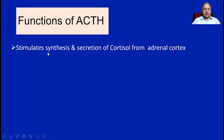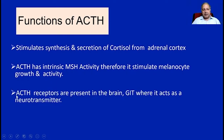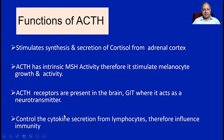ACTH stimulates the synthesis and secretion of glucocorticoids from the adrenal cortex. ACTH also has intrinsic melanocyte stimulating hormone activity; therefore, it stimulates melanocytes and their activity, leading to pigmentation. ACTH receptors are also present in the brain and GIT where it acts as a neurotransmitter. It also controls cytokine secretion from lymphocytes and therefore influences immunity.